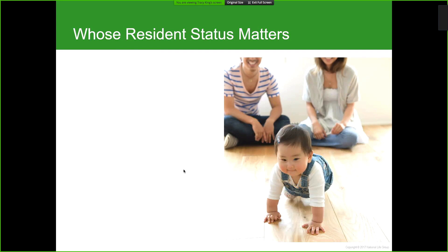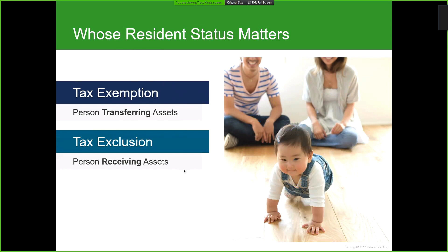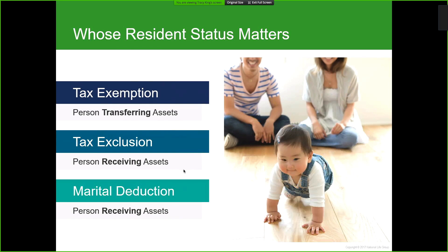How do we determine what effect the answers to these questions have? Whether or not there's an exemption or a deduction available depends on whose residency status matters for which type of exemption, exclusion, or marital deduction. For a tax exemption, it follows the residency status of the person who is transferring the assets — essentially the person who has passed away. For a tax exclusion, those exclusions follow the residency status of the person who is receiving the assets. The marital deduction also follows the person receiving the assets — the person who survives.